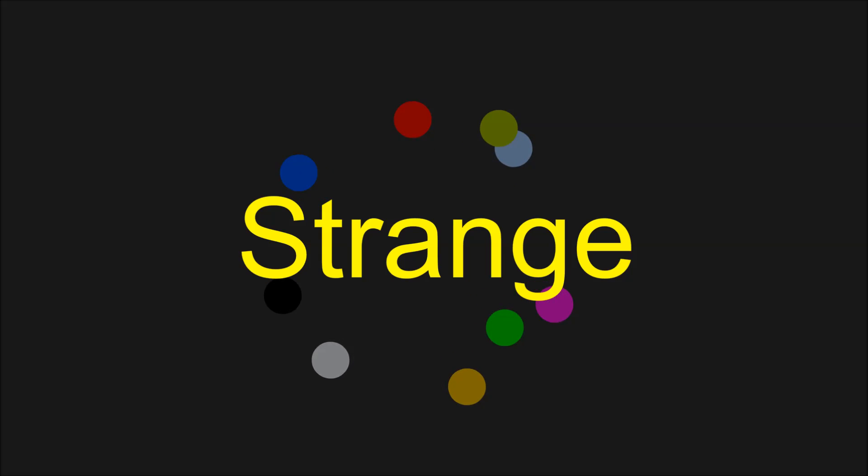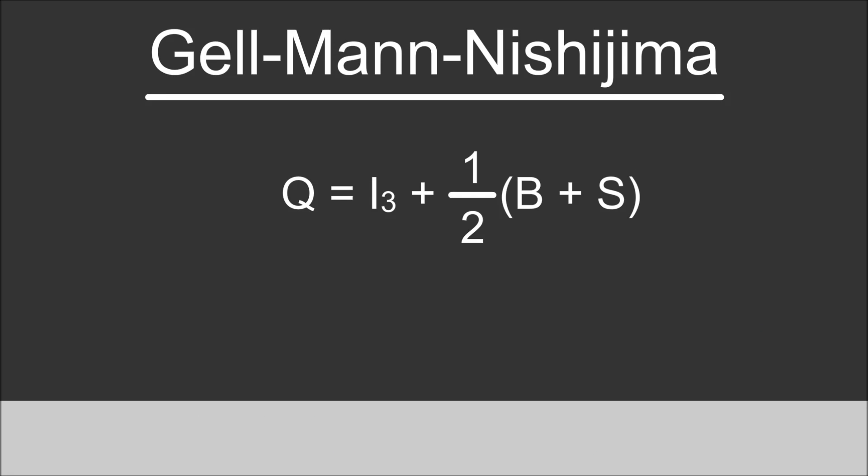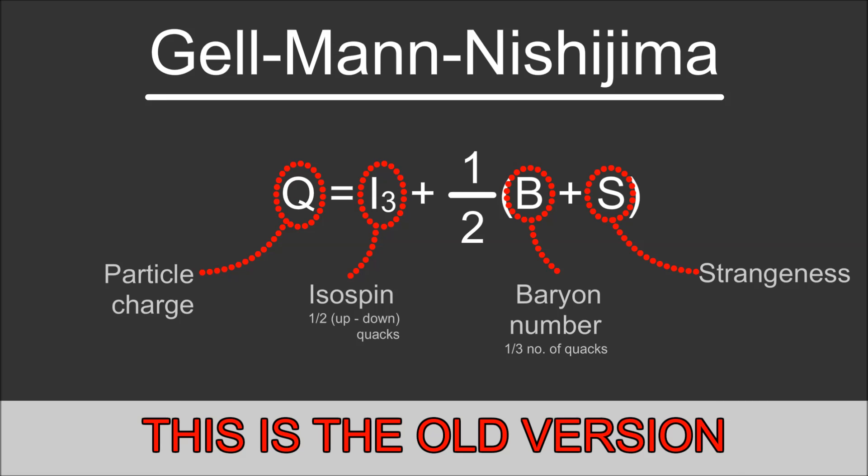As many more particles were being discovered, some hadrons decayed quickly through strong interaction, and some decayed slowly through weak interactions. This was very strange, so they called this property the strangeness of a particle. This led Murray Gell-Mann and Kazuhiko Nishijima to create the Gell-Mann-Nishijima formula in the 1950s.